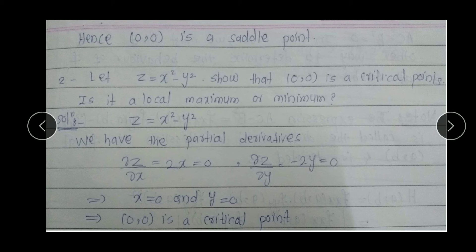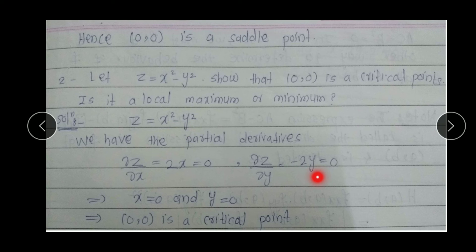Next example: Let Z = x² − y². Show that (0,0) is a critical point. Is it a local maxima or minima? At critical points the partial derivatives are 0. So ∂Z/∂x = 2x = 0 and ∂Z/∂y = −2y = 0. This implies x = 0 and y = 0. Therefore (0,0) is our critical point.